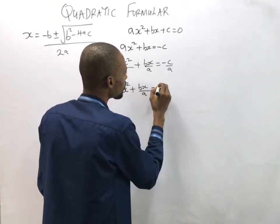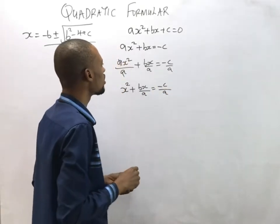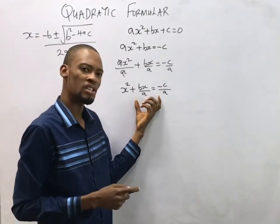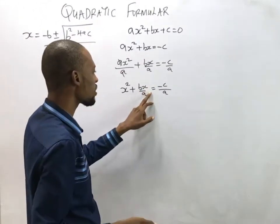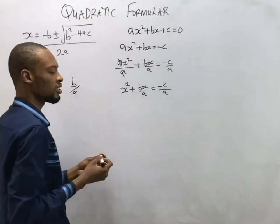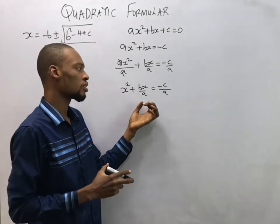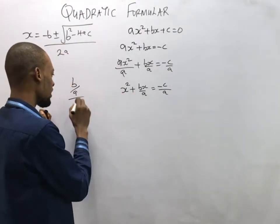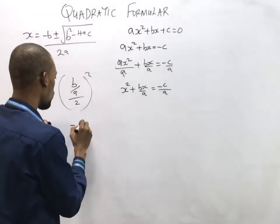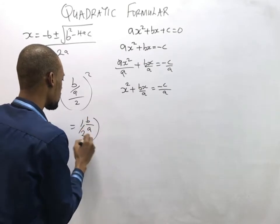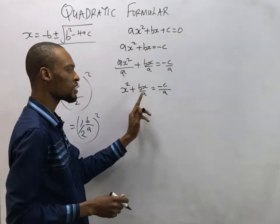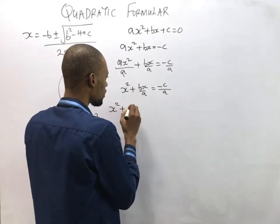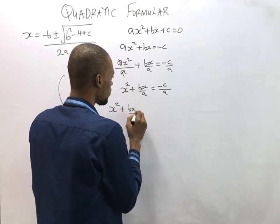Now, in the completing the square method, when you get to this stage you do something specific. The coefficient of x is simply b over a. What you do in completing the square generally is you take the coefficient of x, halve it, and square it. So this is the same thing as one-half times b over a, all squared. We are taking the coefficient of x, halving it, and squaring it.